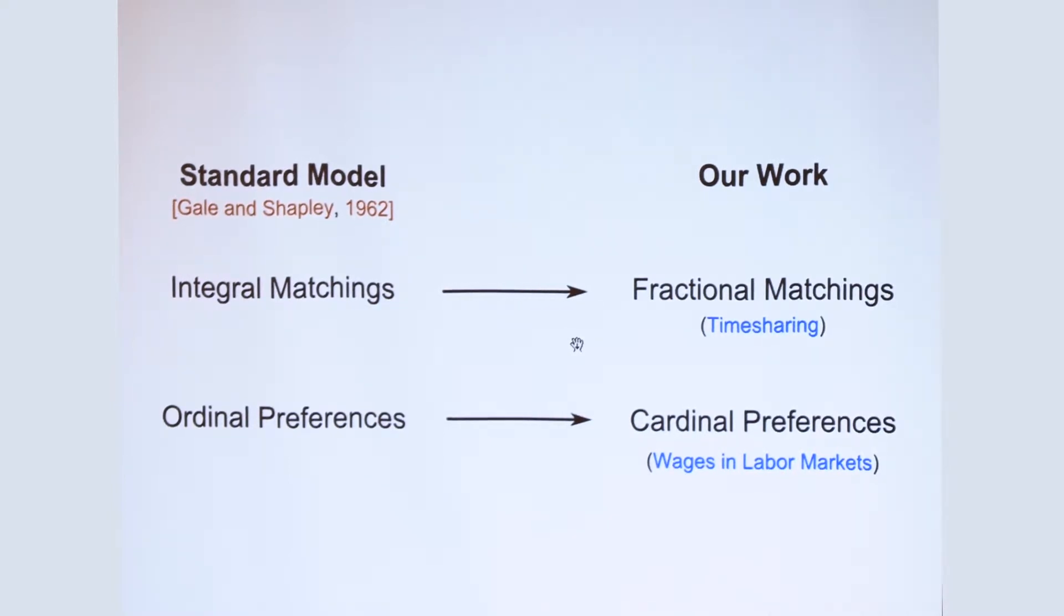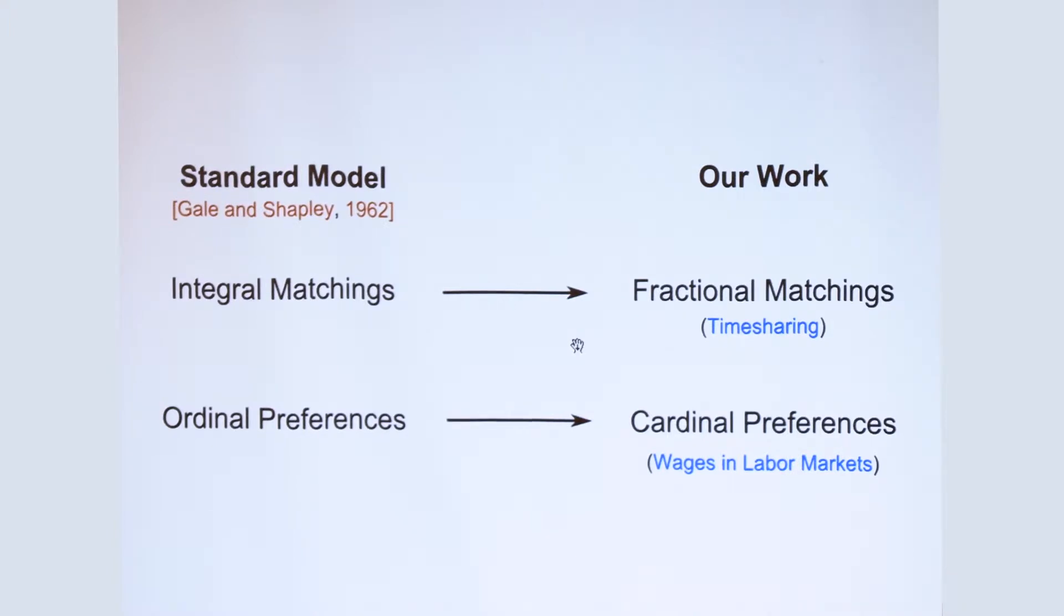These kind of matchings are a relevant model for time-sharing applications, where, for example, say an employer can split his or her time in working over multiple jobs, rather than just working with a single employer all the time. We are also going to generalize the ordinal preferences to a cardinal preference model, which means that each agent now has a numerical utility for every agent instead of just having a ranking. And this is a relevant model for modeling, say, wages in labor markets.